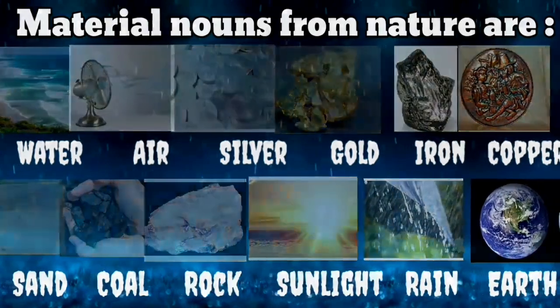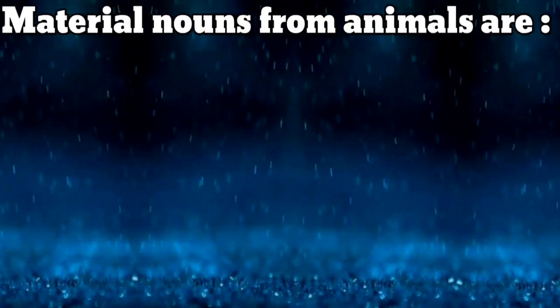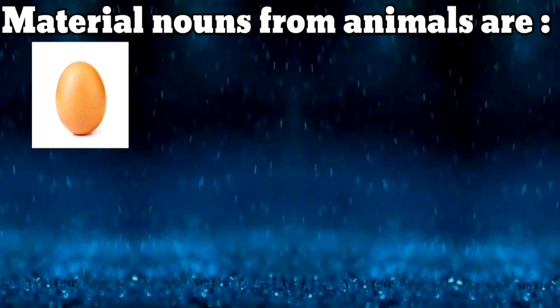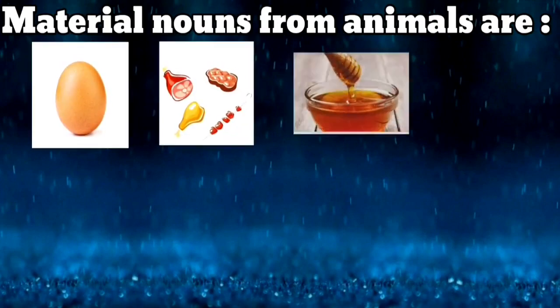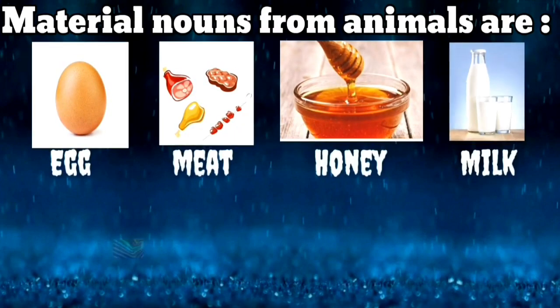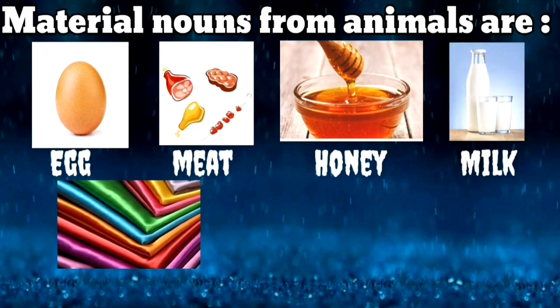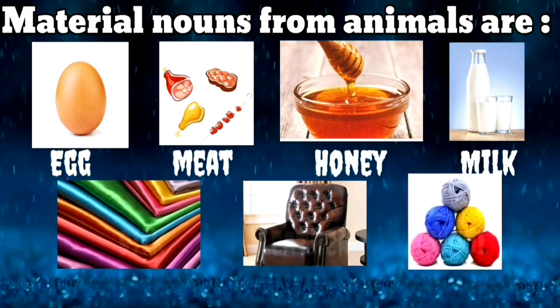Material nouns from animals are egg, meat, honey, milk, silk, leather, wool, etc.